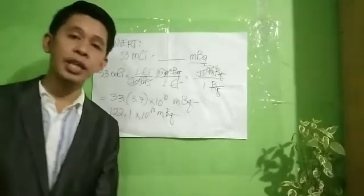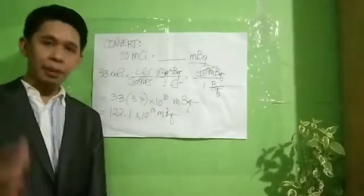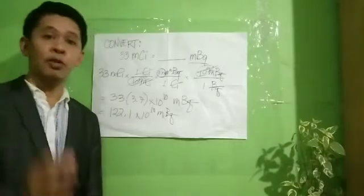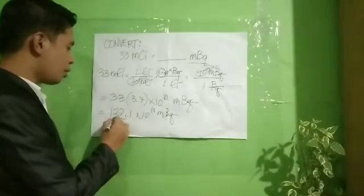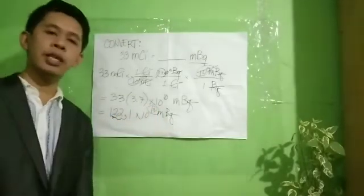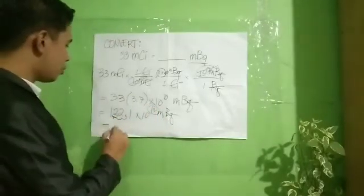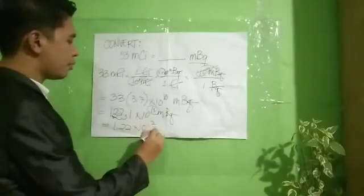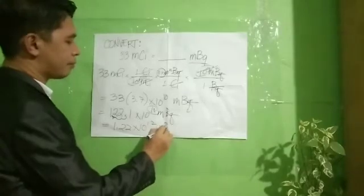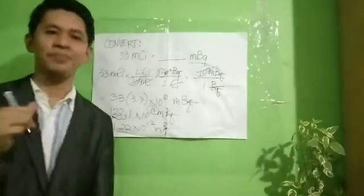Express our answer into a proper scientific notation, which means we are going to move the decimal point going to the left by 2. We add to the exponent by 2. So, that will become 1.22 times 10 raised to 12 millibecquerel.